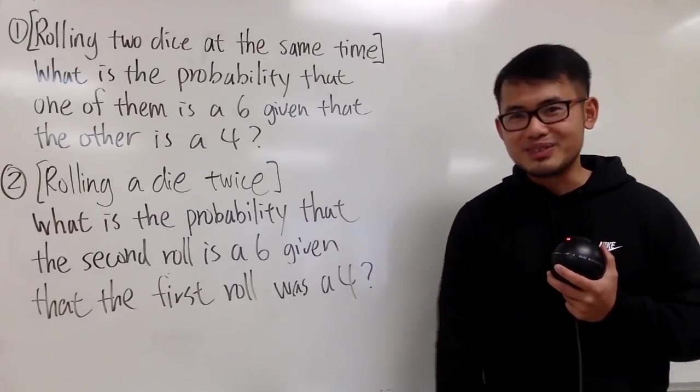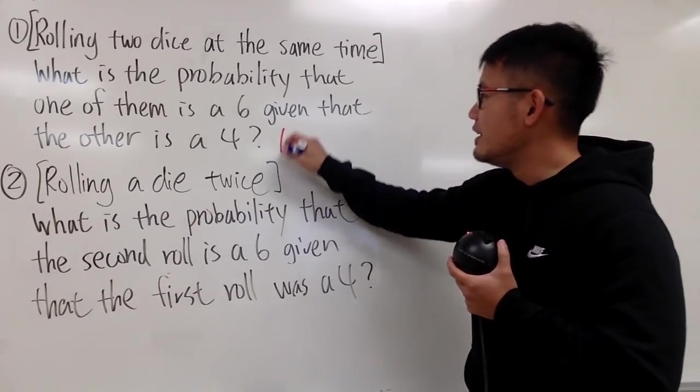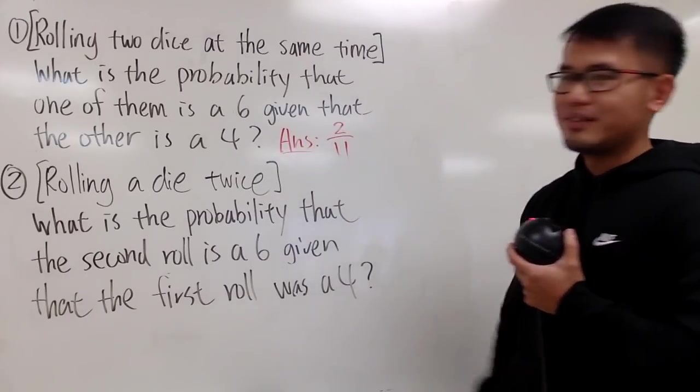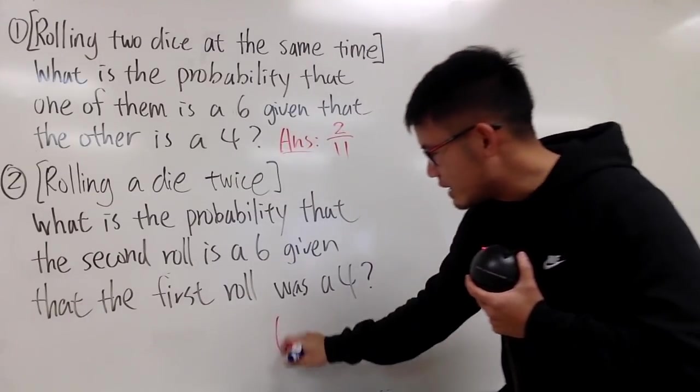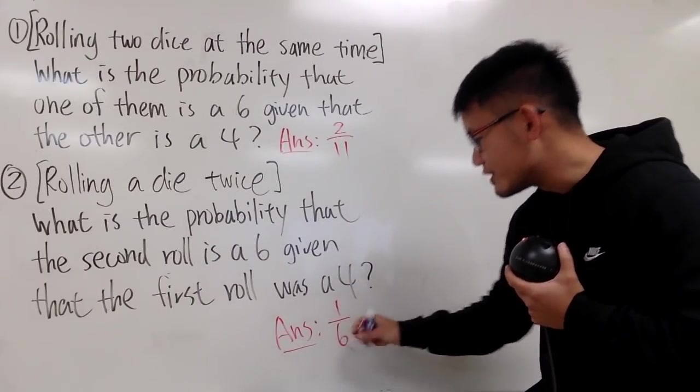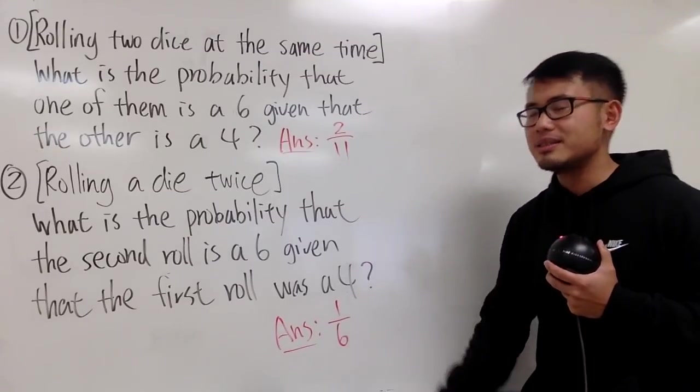And I would actually like to tell you guys what the answers are first. The answer to this one is just like what we did last time, it's 2 over 11. And the answer to the second one, in fact, we do not get the same answer. This right here is precisely just 1 over 6.